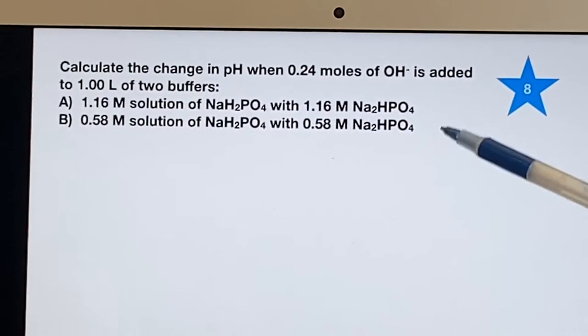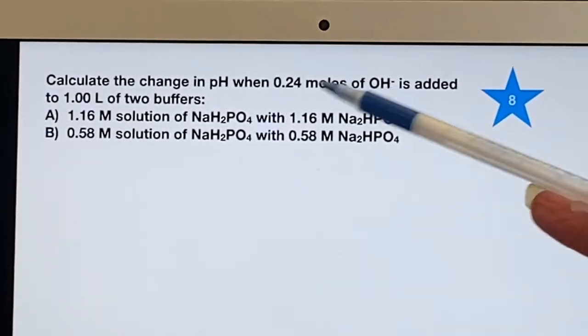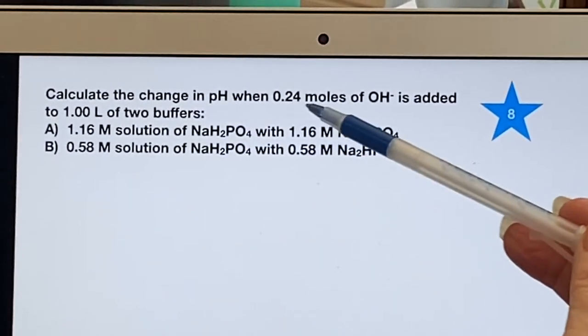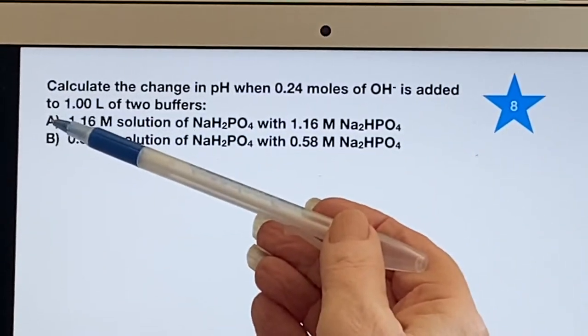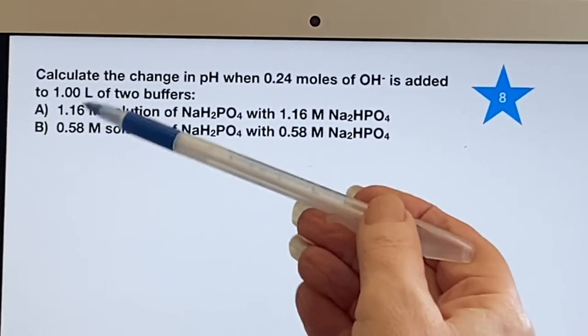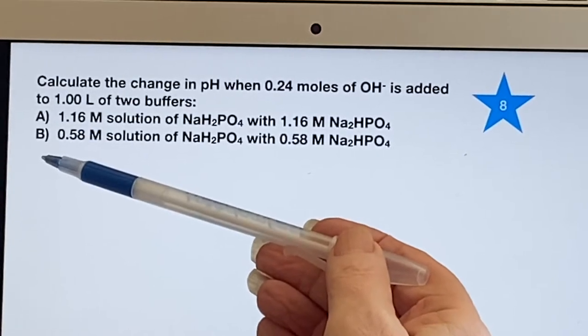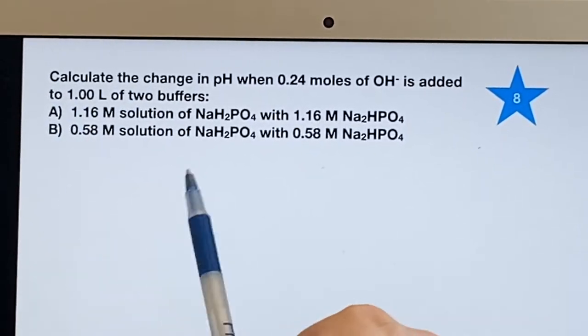So we have two separate issues here. They're going to add 0.24 moles of hydroxide to one liter of two different buffers. So case A and case B.